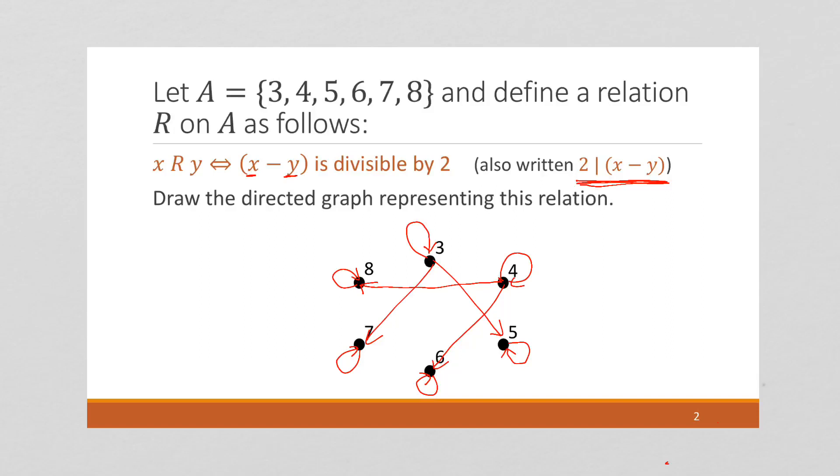6 minus 8 is negative 2, so we have an arrow there. 7 minus 5 is 2, so we've got an arrow there. And now notice,